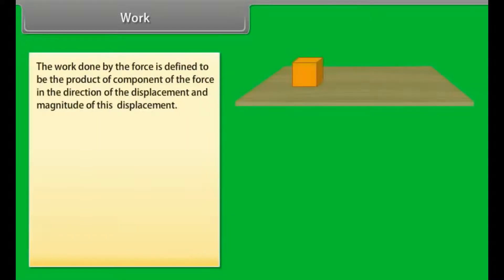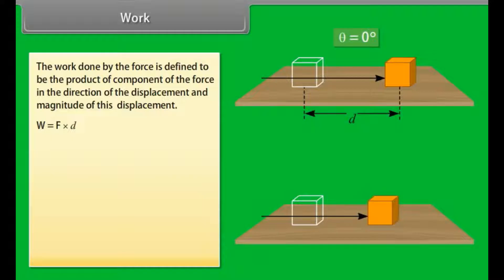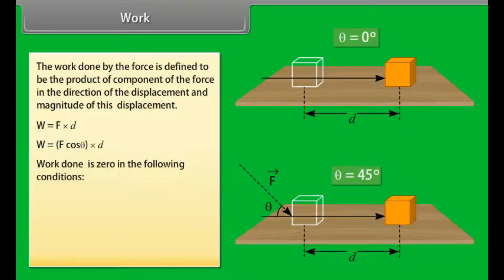Work. The work done by the force is defined to be the product of component of the force in the direction of the displacement and magnitude of this displacement. W = F·D, W = F cos θ·D.